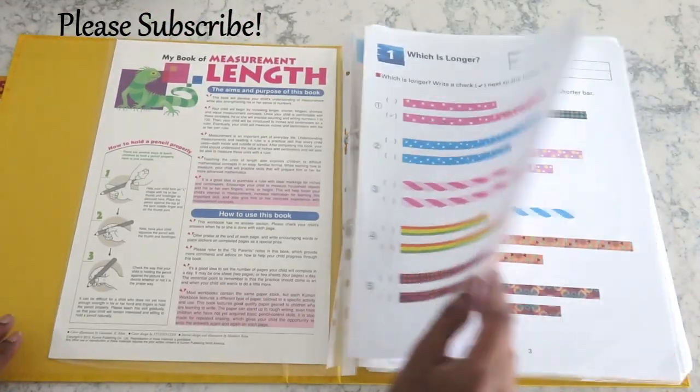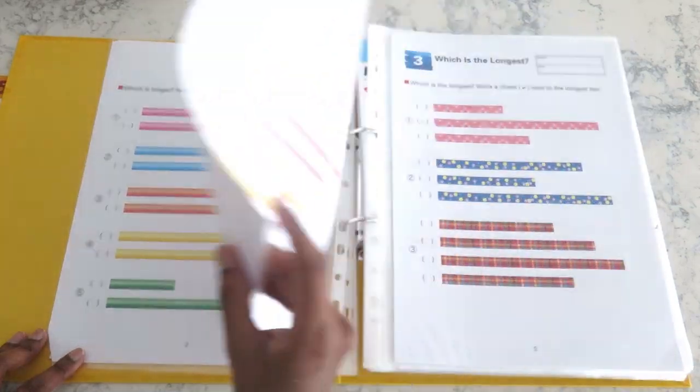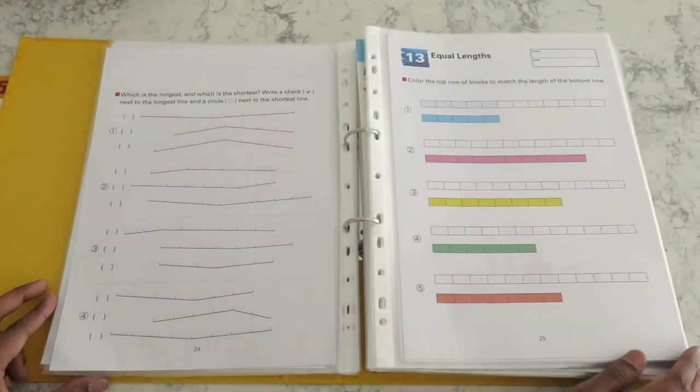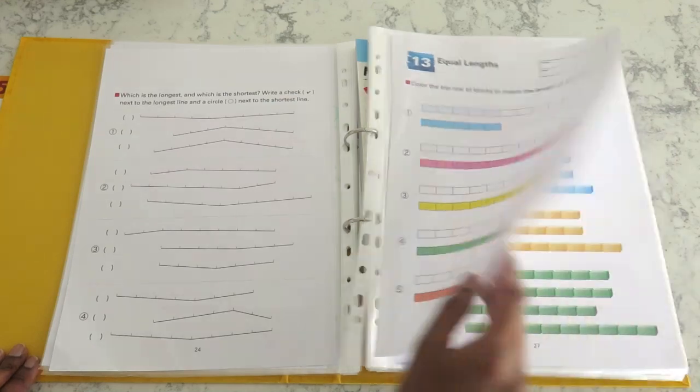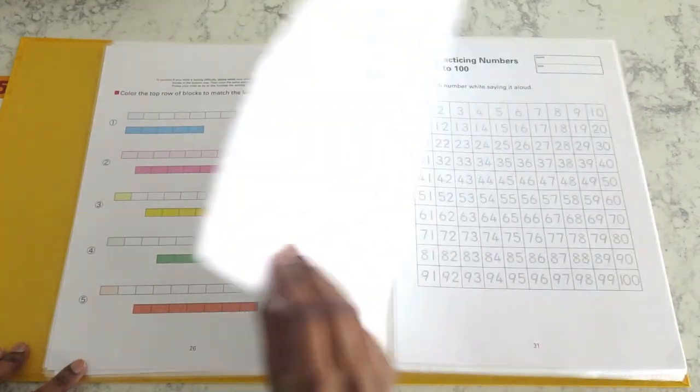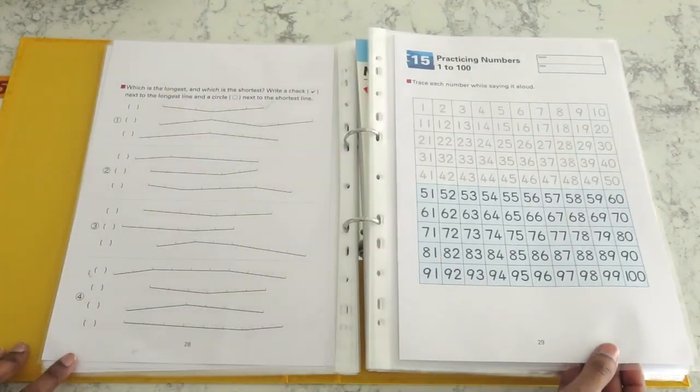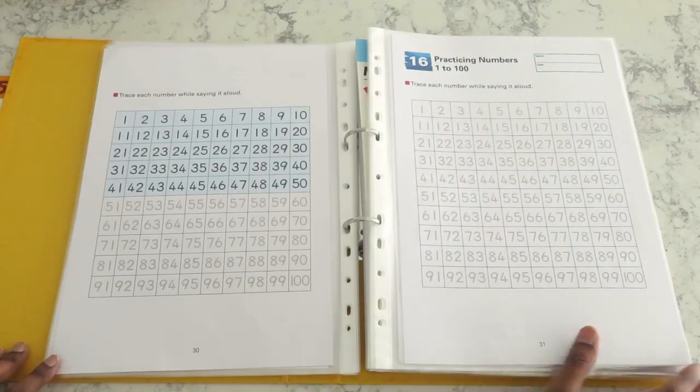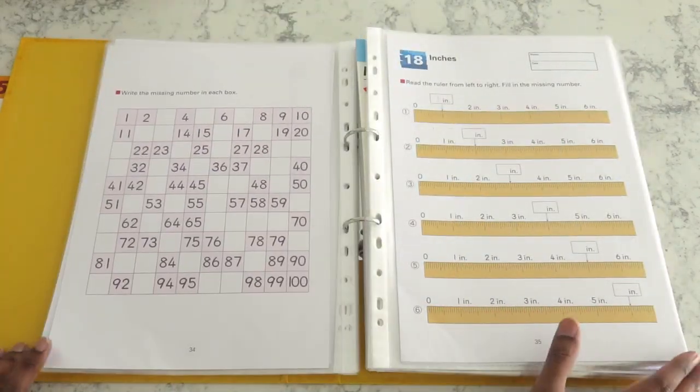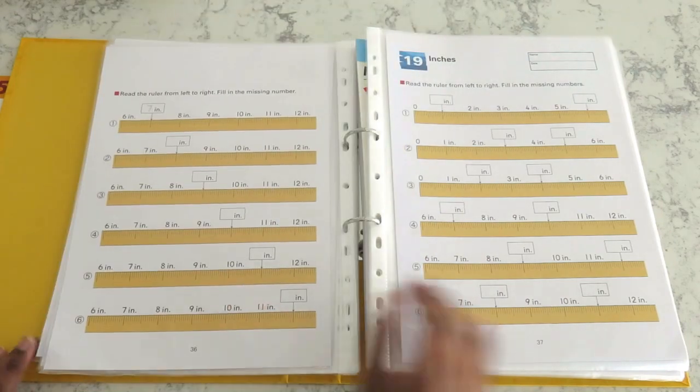A while ago I did a series of videos on Kuhlman workbooks. I didn't include these three books in that series because these are geared towards children between the ages six to eight. But my son who's three was able to do them and he actually really found the concepts very interesting and he really enjoyed doing them.